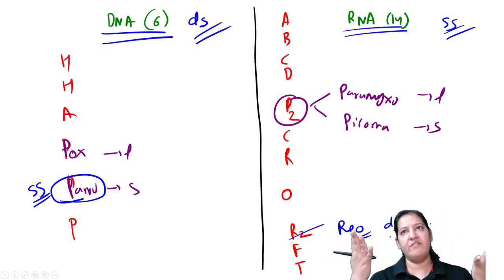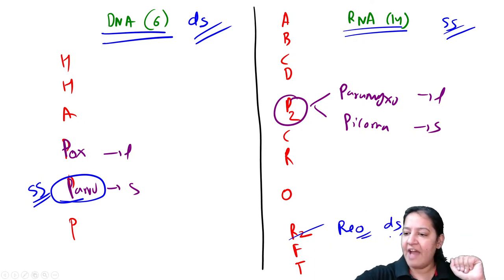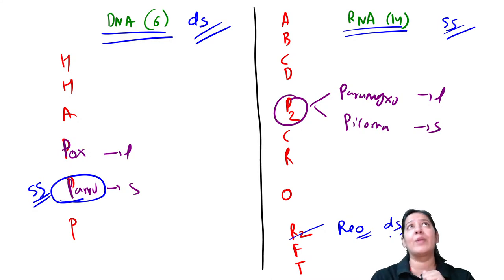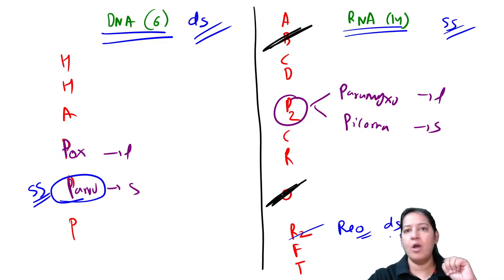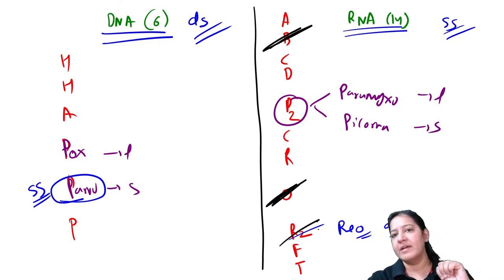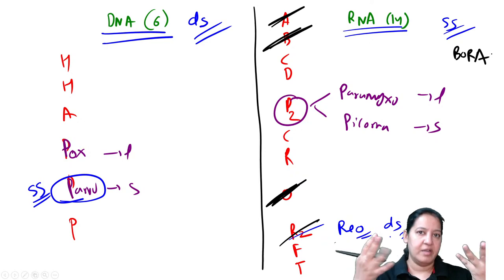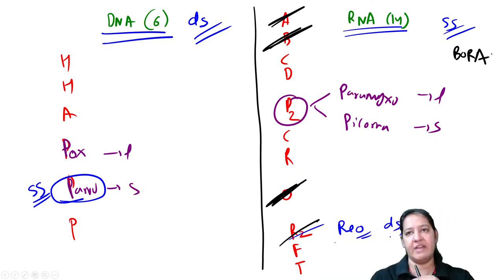Fragmented nucleic acid is present only in 4 viruses - the mnemonic is BORA: B is Bunya, O is Orthomyxo, R is Reo, A is Arena. There is no fragmented DNA virus - only fragmented RNA viruses, and those are BORA. The fourth important summary point about nucleic acid is envelope vs non-enveloped.